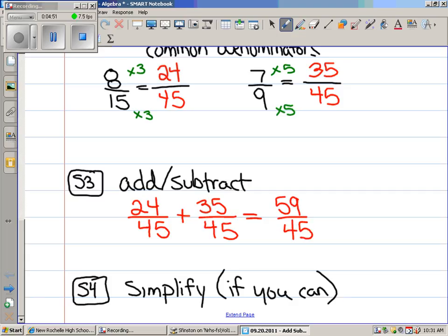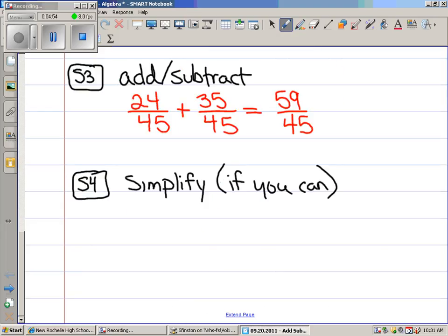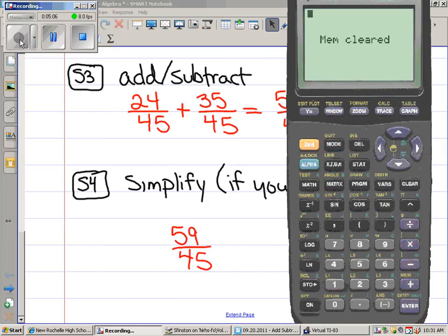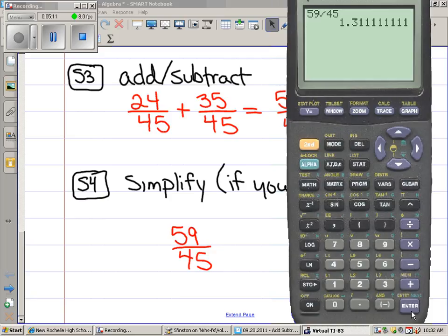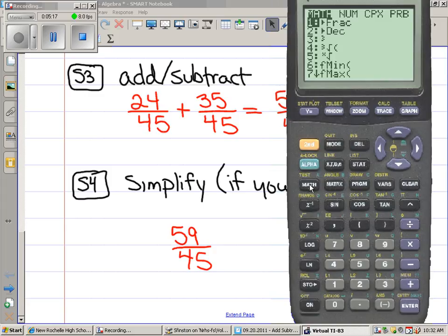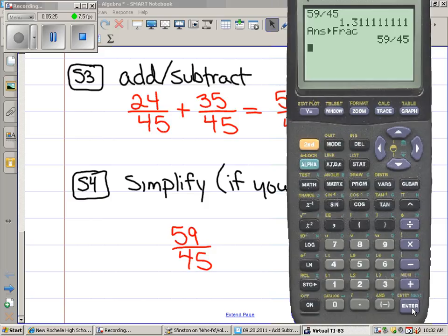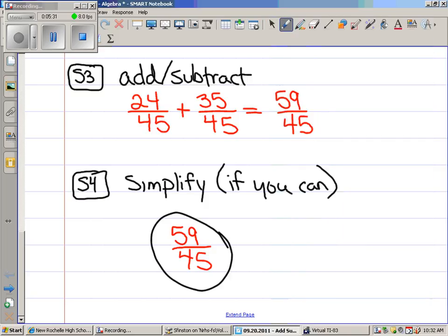And then finally, we're going to have to simplify. It's not going to be like it was back in the day where you were just guessing at stuff. You can use your calculator to simplify real fast. Let me show you. So here's how you simplify: 59 divided by 45. See that? Hit the math button. And you see where it says convert to a fraction? Hit enter and enter again.